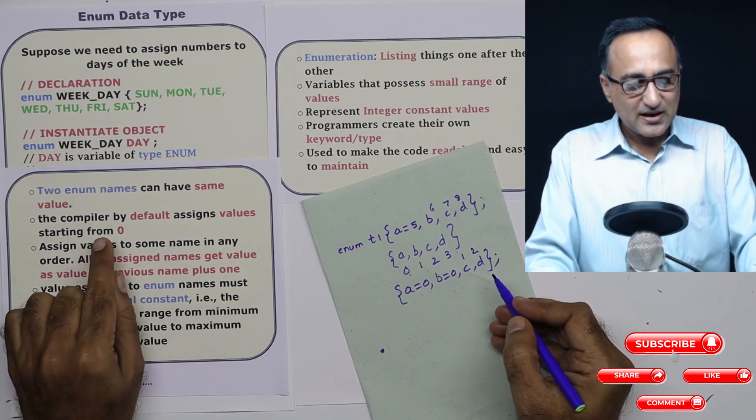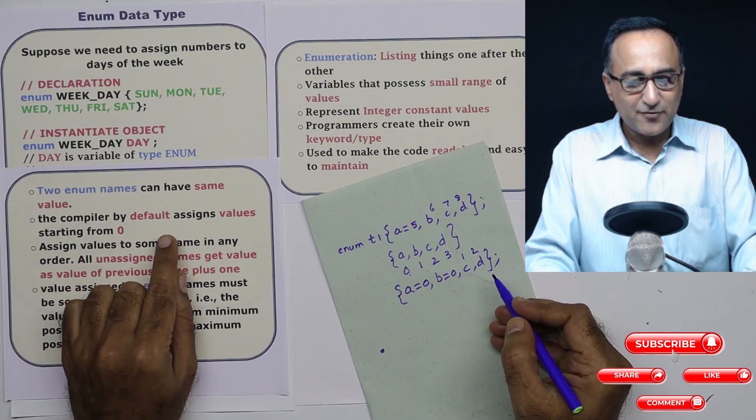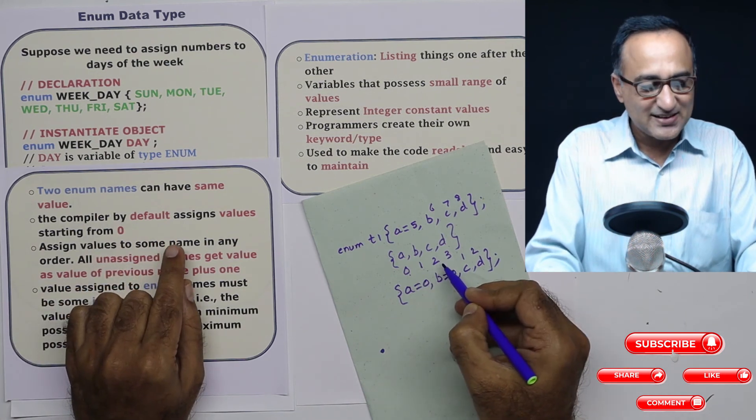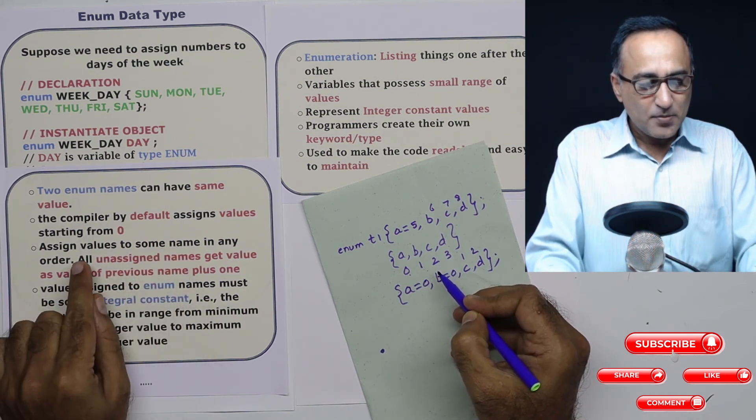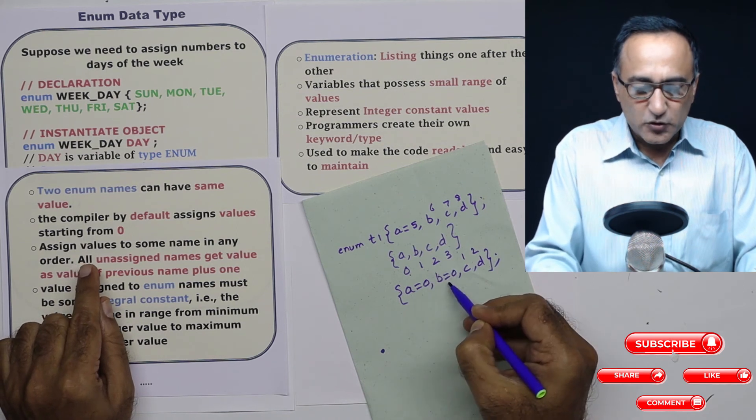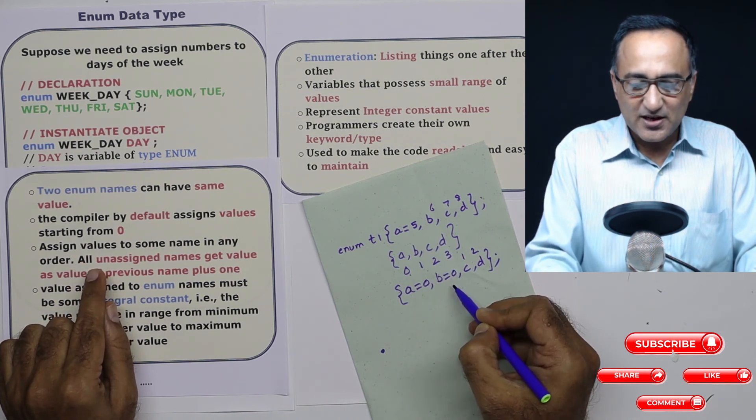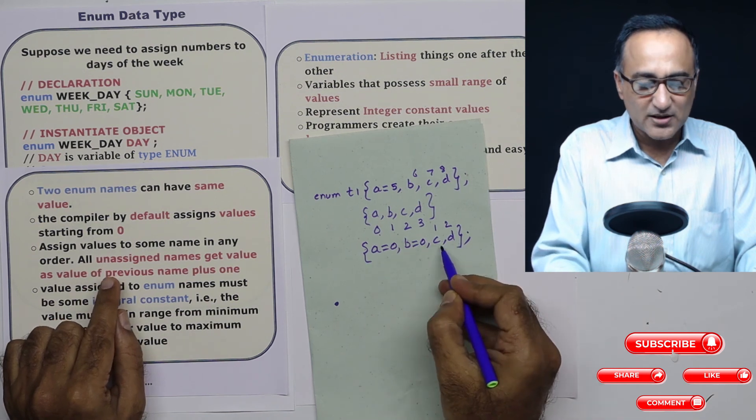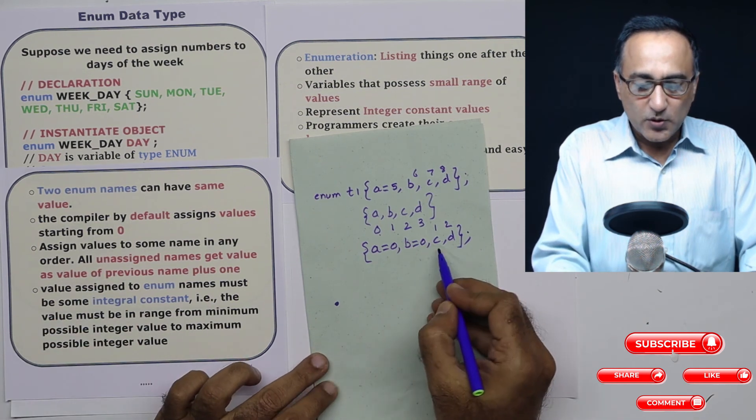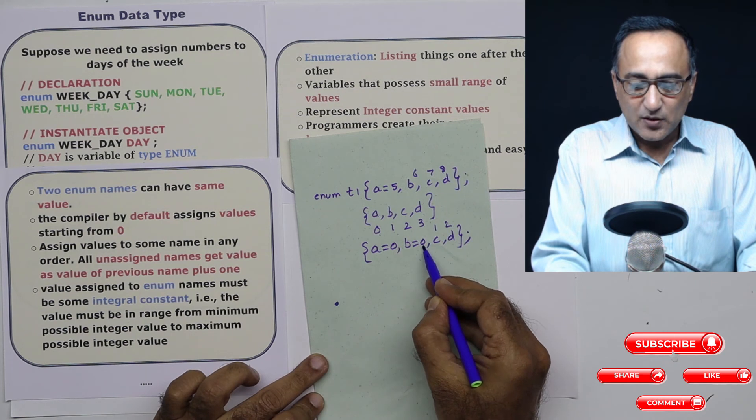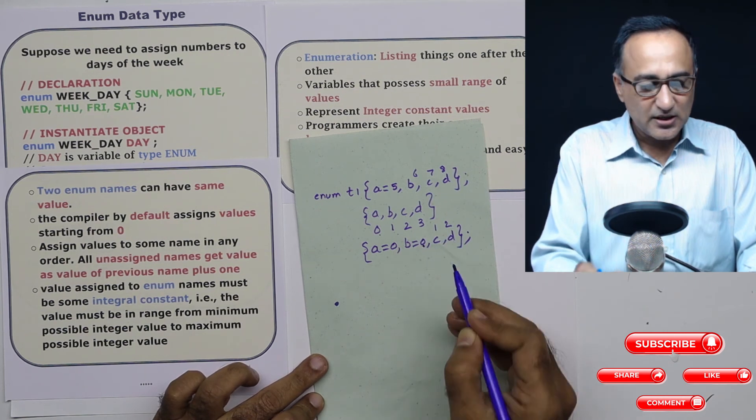So what it means is understand three things compiler by default starts assigning from 0 as in this case. Now you may choose to assign values only to some like in the case of this, I have assigned values only to a and b, I have not given many values assigned to c and d. So what will the next unassigned fellow take, 1 plus the previous value. So this is 0, this will be 1 and this will be 2.